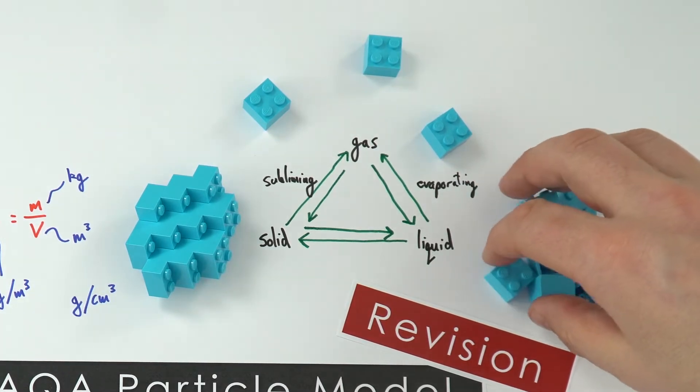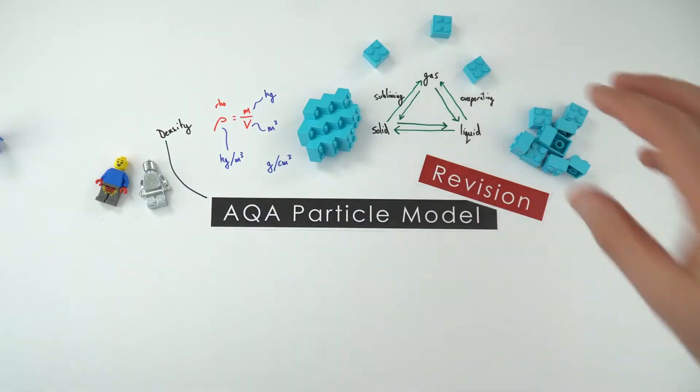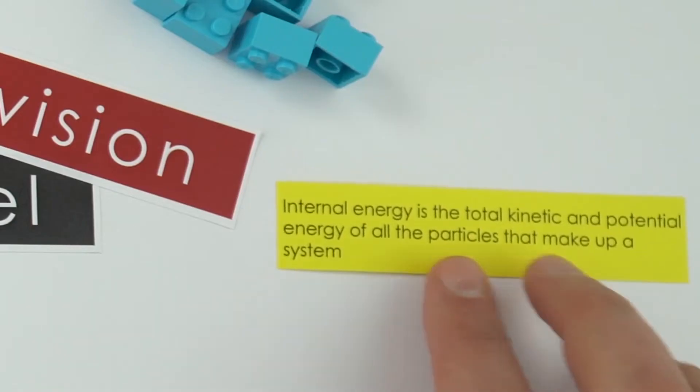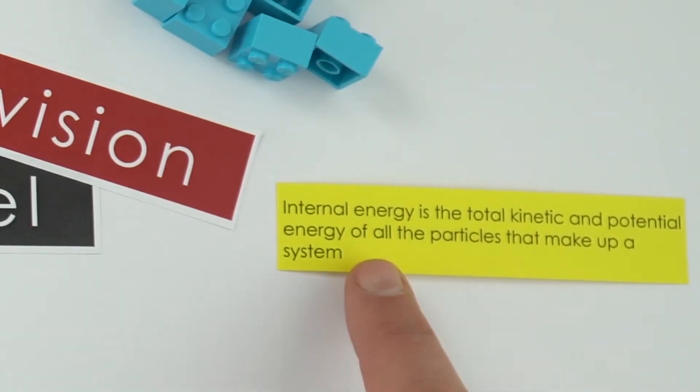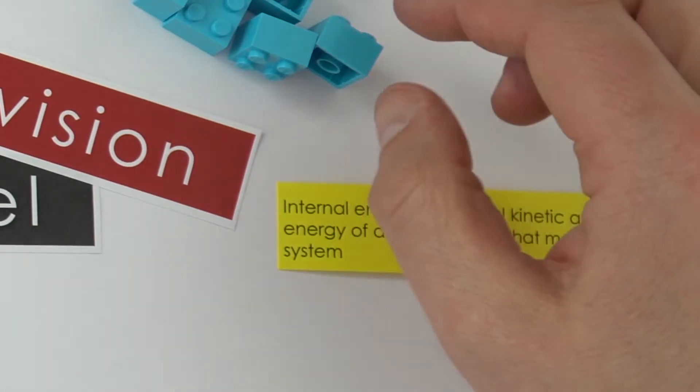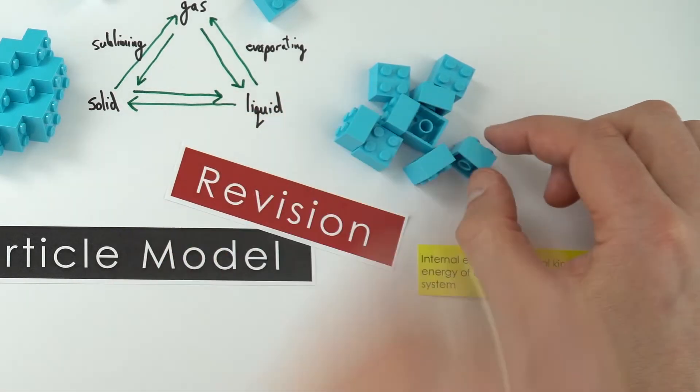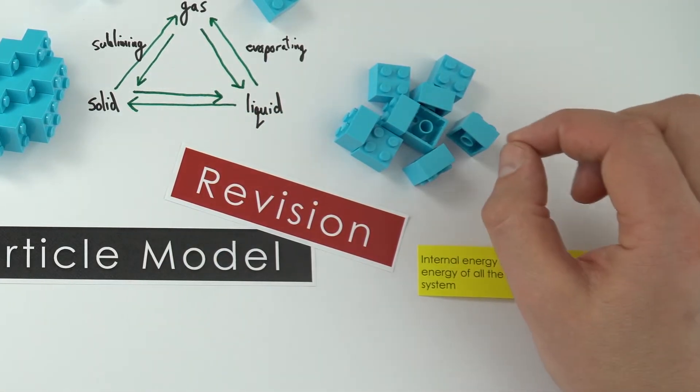All these particles may be moving around, and we can consider something's internal energy. Internal energy is defined as the total kinetic and potential energies of all the particles that make up that system. This is a combination of their potential energy, which is due to the arrangement of the particles, as well as how quickly they're vibrating and moving around.